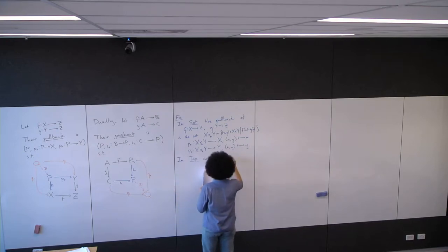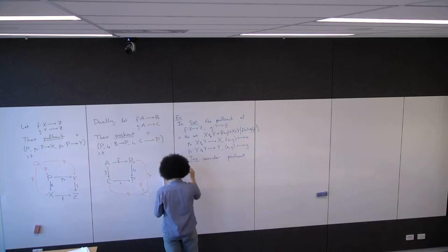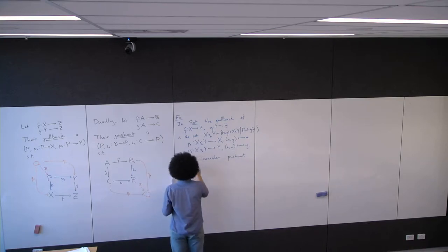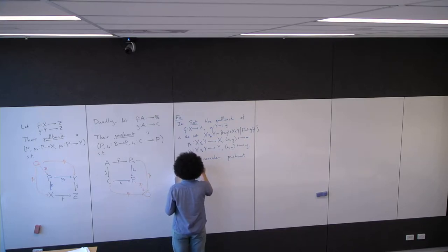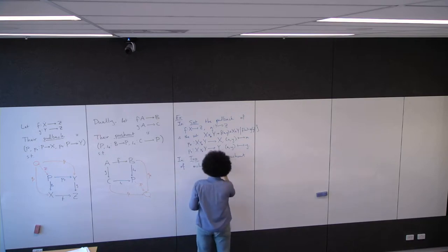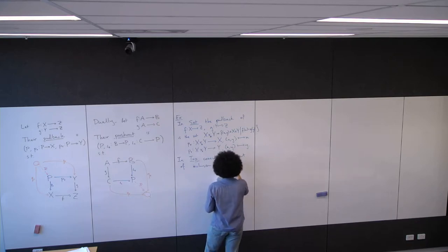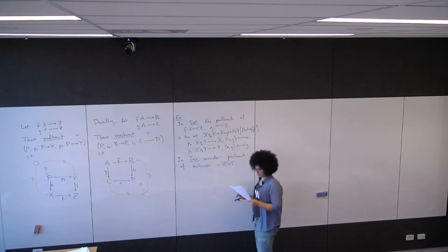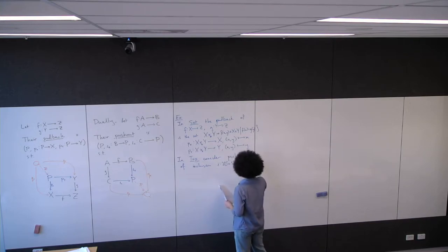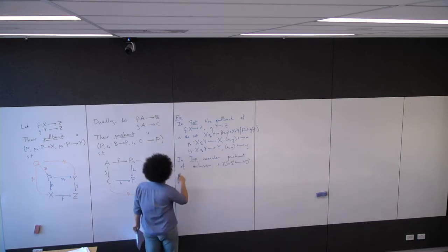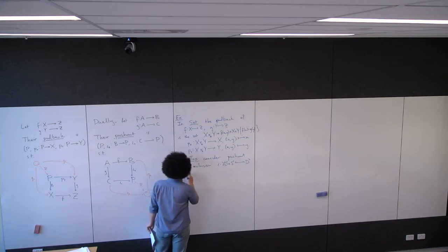The pushout of the inclusion i of the boundary of the two-disc, which is the one-sphere or the circle, including that into the two-disc — the pushout of this inclusion along itself.